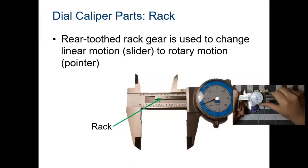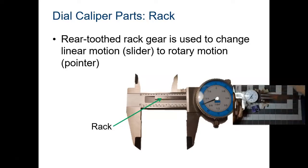And there's a rack. This rear tooth rack gear is used to change linear motion. You can see it looks like little teeth. It helps move the slider and also moves the pointer.